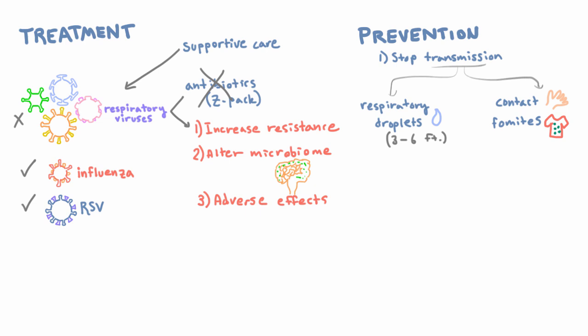But when it comes to the hospital, we want to be a little more precise, because if we know a patient has a respiratory virus, we can take extra precautions to make sure we don't spread that virus to another patient. The precautions we take depend on whether the virus transmits mostly by droplet or by contact. If a patient has a virus that transmits mostly by droplet, we put them on droplet isolation, which means people going into the room should wear a mask over their mouth and nose.